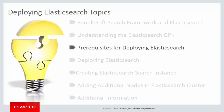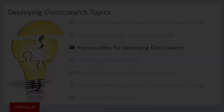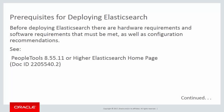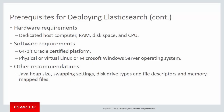Before deploying Elasticsearch, review the hardware requirements, software requirements, and other configuration and performance recommendations. You can find this information in the PeopleSoft Deployment Packages for Elasticsearch Installation document. Hardware requirements include using a dedicated host computer for the Elasticsearch instance, and available RAM, disk space, and CPU on the host.